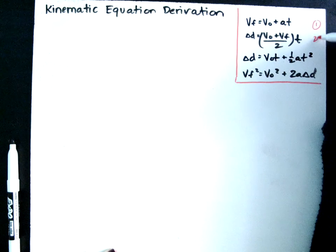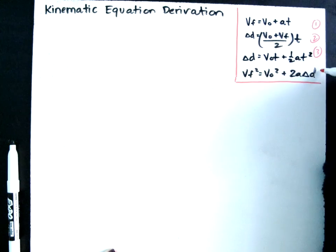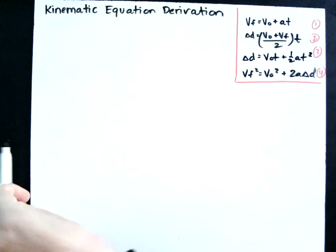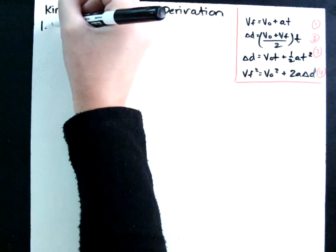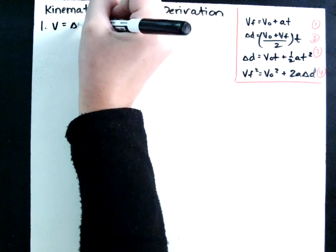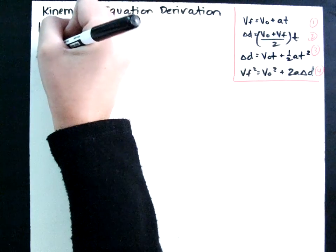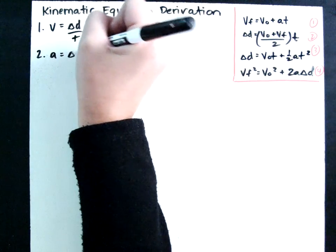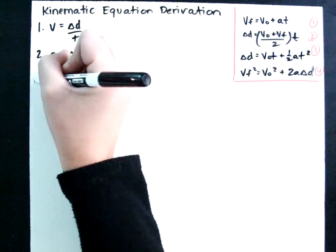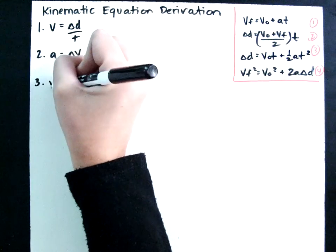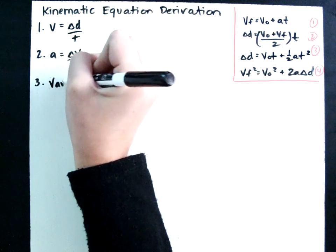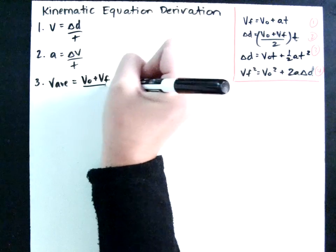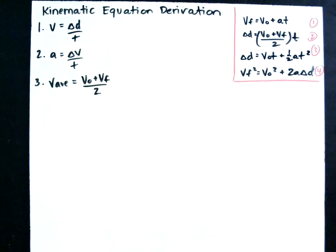I want you to know where these four equations came from, so that's what I'm going to show you today. We know three things: velocity equals displacement over time; acceleration equals the change in velocity over time; and average velocity equals initial velocity plus final velocity divided by 2.